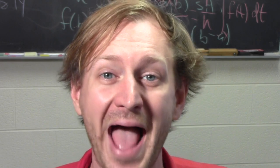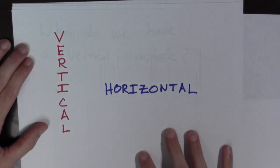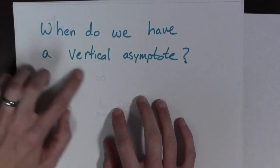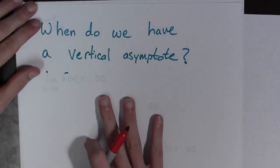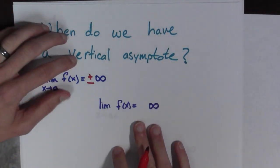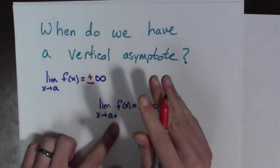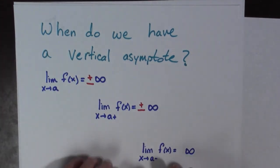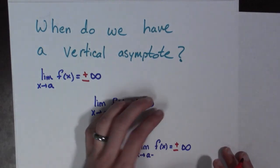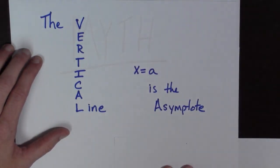Today we're going to talk about asymptotes. In this class, there are two basic types: vertical and horizontal asymptotes. When do we have a vertical asymptote? We have one when the limit as x goes to a of f of x equals plus or minus infinity — whether from the right, from the left, or the two-sided limit. The vertical line x equals a is the asymptote.